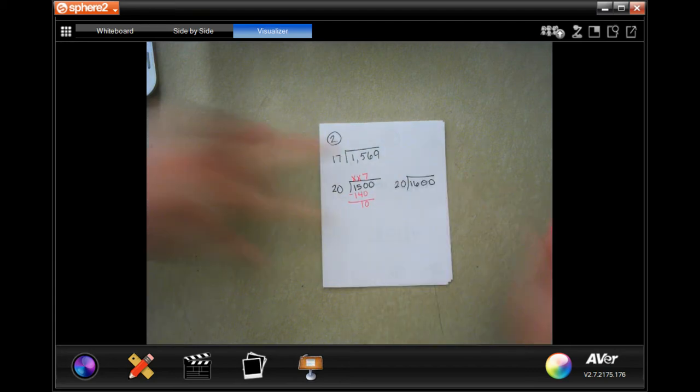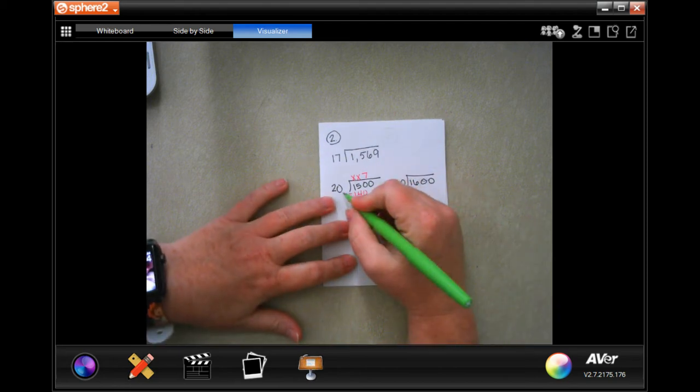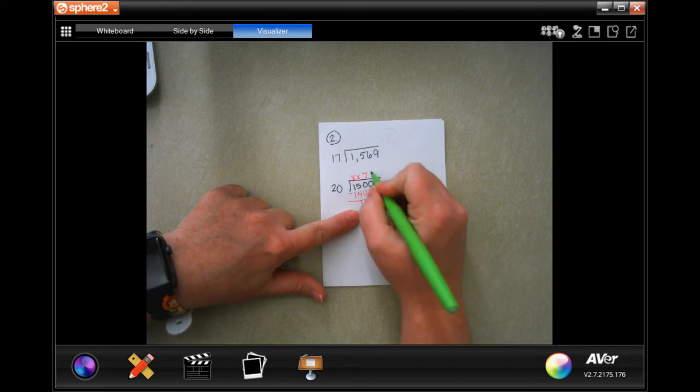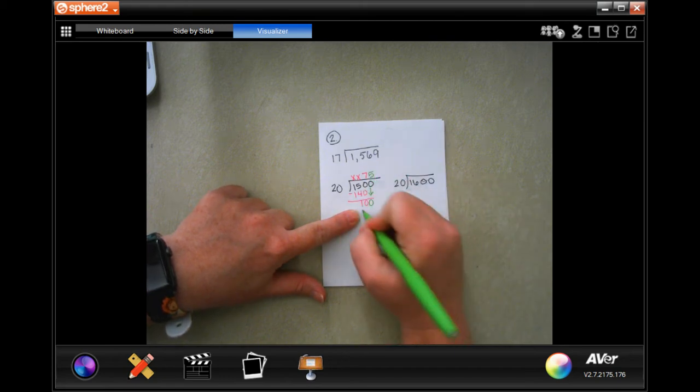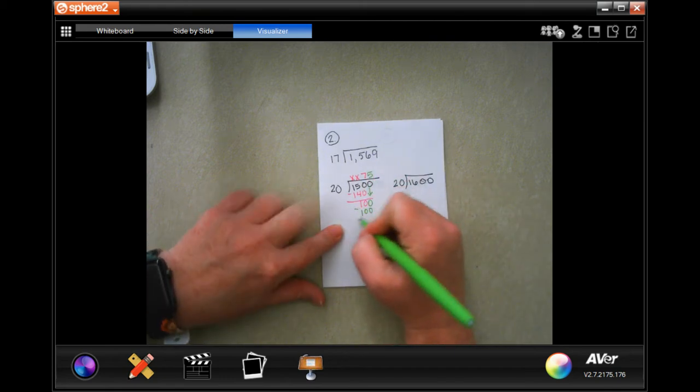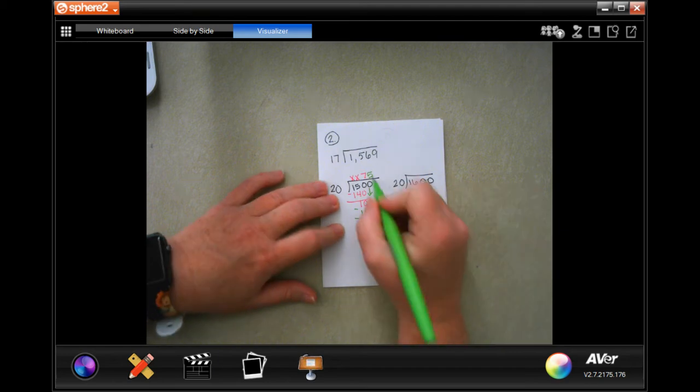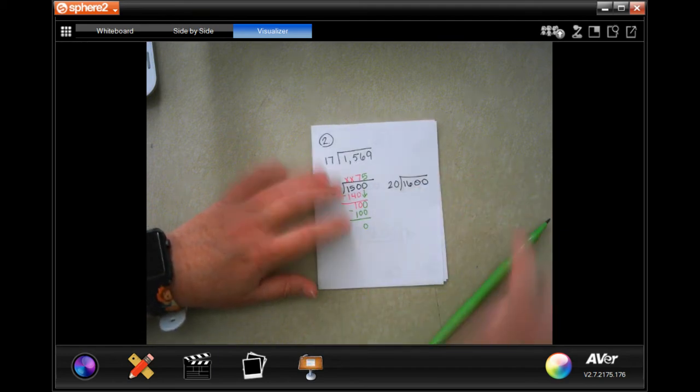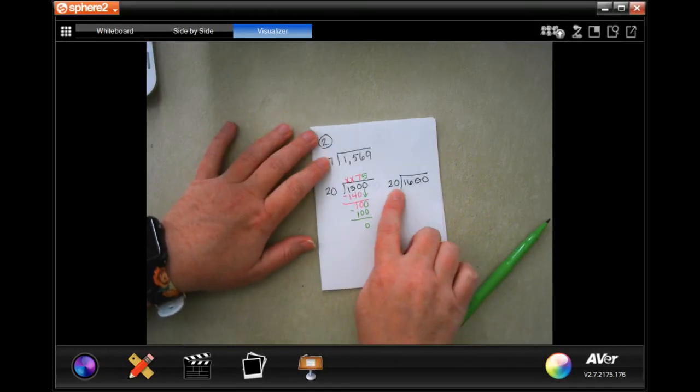Subtract, we get 10. Now 10 is definitely smaller than 20, that's my checking. I'm going to go ahead and bring down my other zero. 20 goes into 100 five times. 5 times 20 is 100. So that's one of your estimates.